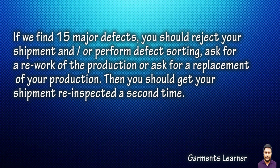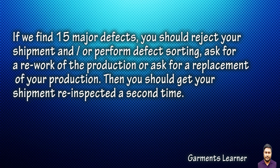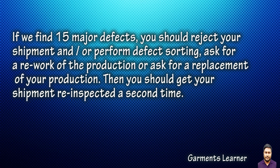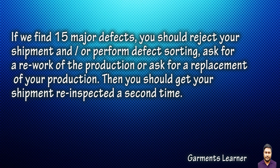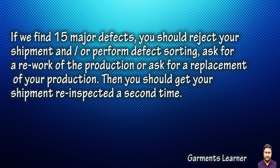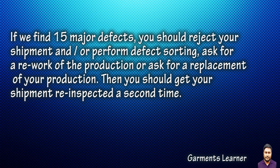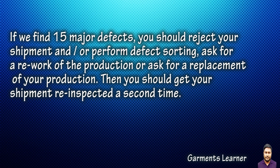If we find 15 major defects, you should reject your shipment and either perform defect sorting, rework part of the production, or ask for replacement production. You should then get your shipment re-inspected a second time.